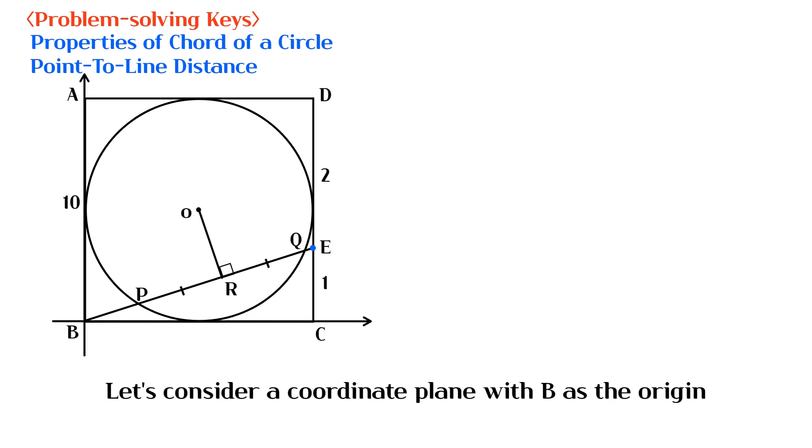Let's consider a coordinate plane with B as the origin. If the graph passing through point B and point E is line K, the coordinates of center of circle O are (5, 5).